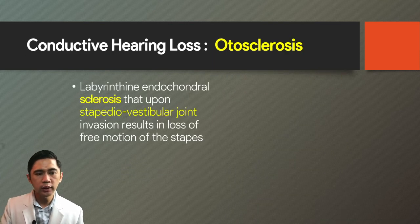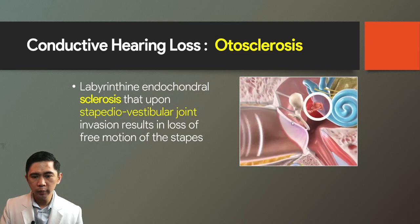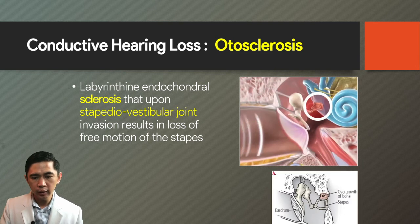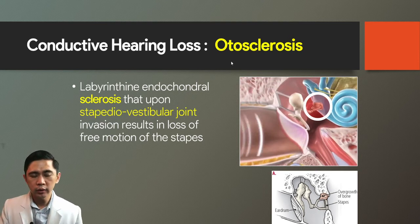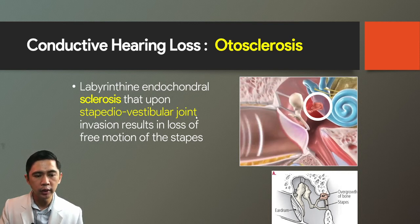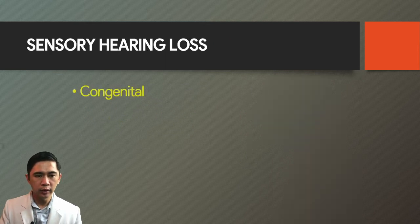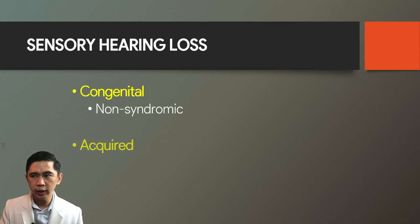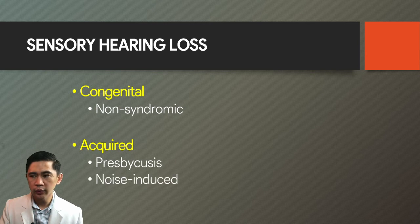Otosclerosis is a phenomenon in the stapes wherein there is overgrowth of bone, rendering the stapes immobile. It is a labyrinthine endochondral sclerosis upon the stapedio-vestibular joint that results in loss of motion of the stapes.